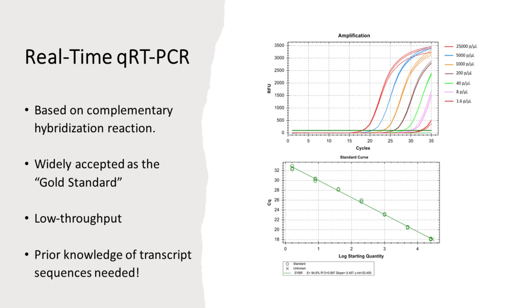However, qRT-PCR suffers from the limitation that it can quantitate the expression level of only one transcript at a time. Also, this technique needs to know in advance the sequence of the transcript to quantitate, making it difficult to discover unknown transcripts.